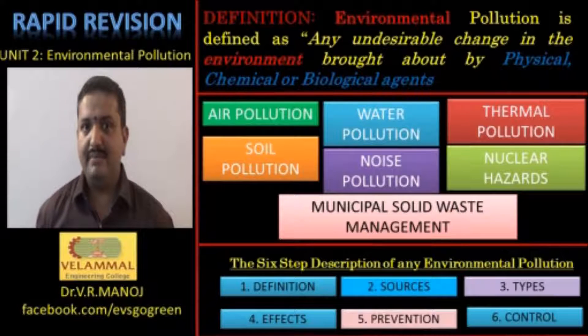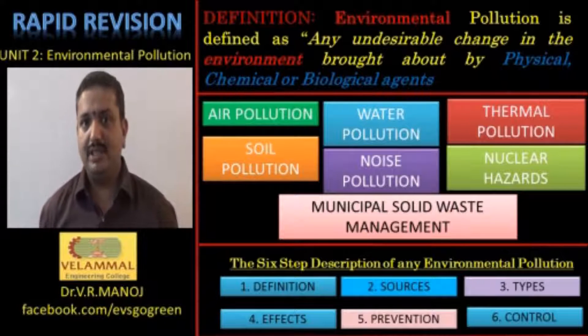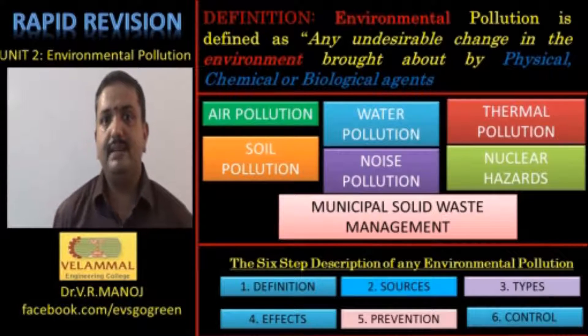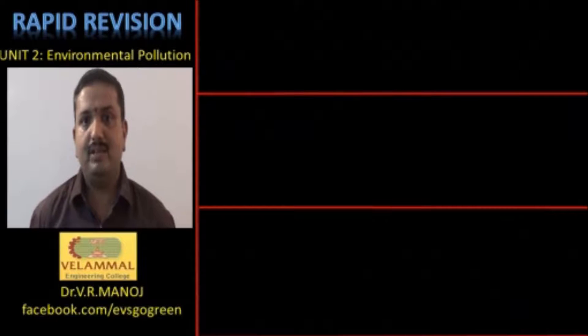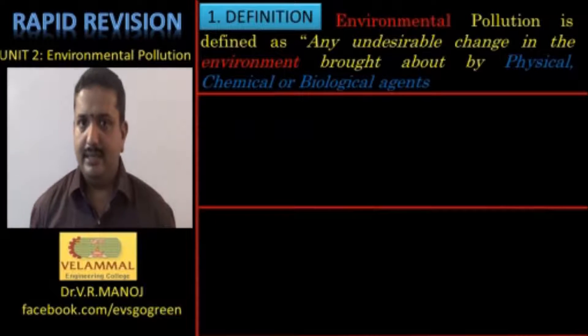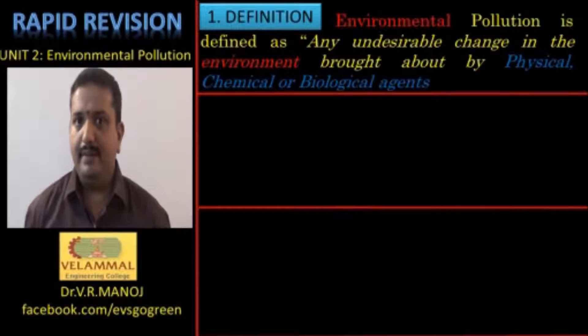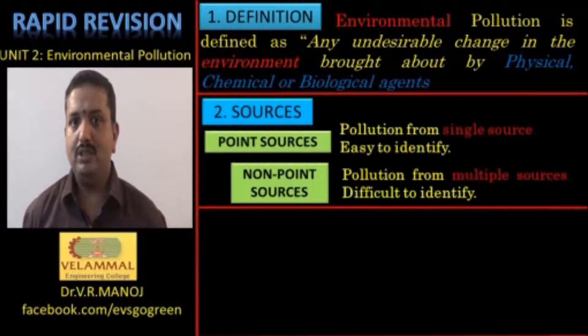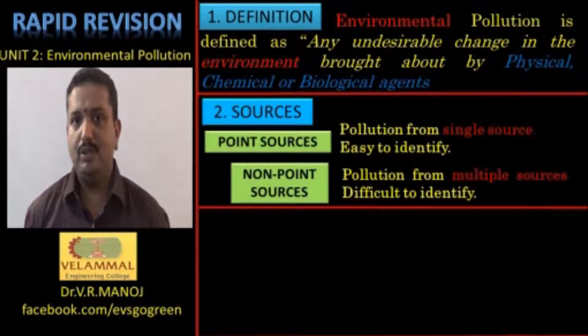Number one: define the environmental pollution as any undesirable change in that particular environment caused by physical, chemical, or biological agents. Number two: tell about the sources of the pollution.